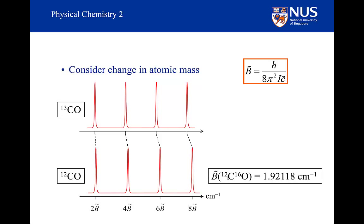For the carbon-12 monoxide, the rotational constant is equal to 1.92 wave numbers. And for carbon-13 monoxide, it is equal to 1.84 wave numbers.